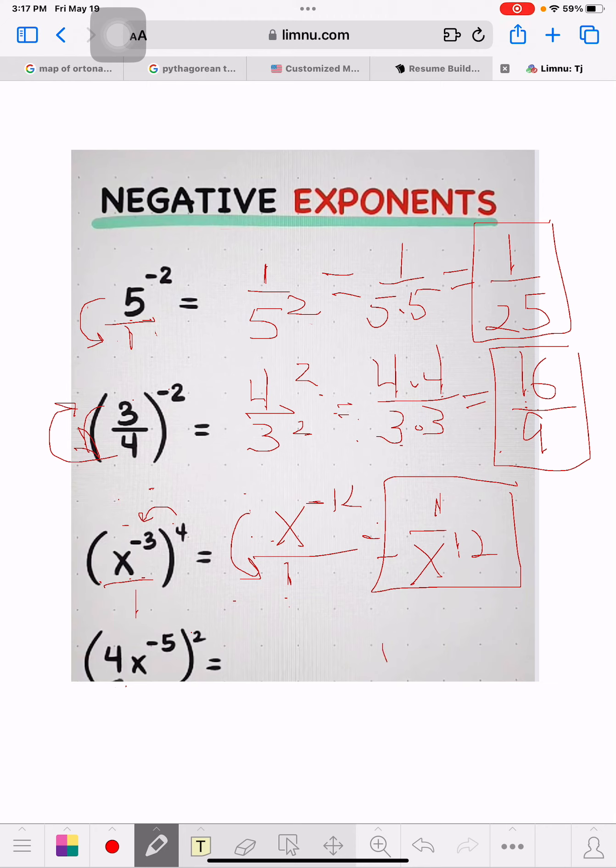Now, the next one. It's 4x brackets to the negative 5 times 2 to the second power. The way this works, this second power has got to go to both. It's got to go to the 4, and it's got to go to the x to the negative 5.